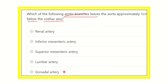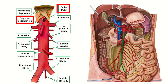Here we can see the abdominal aorta in this picture. The abdominal aorta starts at the lower part of the diaphragm and ends at the level of the lumbar four vertebra, dividing into the right common iliac artery and left common iliac artery. These common iliac arteries are the terminal branches of the abdominal aorta.